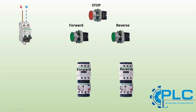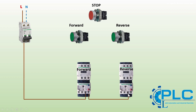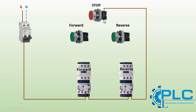Let's proceed with the wiring process while referencing component images for a hands-on understanding. Step 1: Connect the output of the fuse to the input of the first thermal overload relay at terminal 95. Step 2: Connect the output of this relay from terminal 96 to the input of the second thermal overload relay. Step 3: Connect the output of the second bimetal relay to the input of the stop push button. Step 4: Connect the output of the stop button to the inputs of the start push buttons and the normally open auxiliary contacts of both contactors.